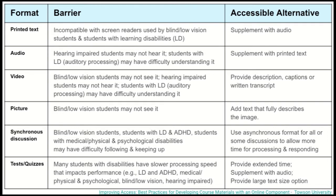This screen may be somewhat difficult to read on the video, but I'll highlight some of the formats commonly used within a course, the barriers that exist, and also some of the accessible alternatives you can use. For example, if you normally use printed text in a course, that printed text on a piece of paper is incompatible with screen readers. Screen readers are used by people who are blind or have low vision, and students with learning disabilities. What you can do with that printed text is also supplement it with audio. Hearing-impaired students may not be able to easily hear audio content, and students with auditory processing issues may also have difficulty. Audio can be supplemented with printed text, such as providing a transcript for the audio.